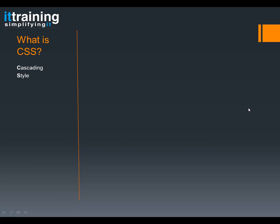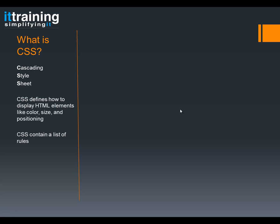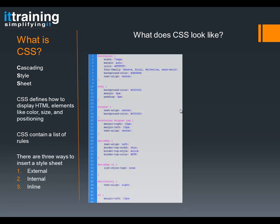So what is CSS? It stands for Cascading Style Sheets. CSS defines how to display HTML elements — like color, size, and positioning. The who would be what type of tag, the what would be its color, and the how is what color you want it to be. CSS contains a list of rules, and there are three ways to insert a style sheet: externally, internally, or inline.